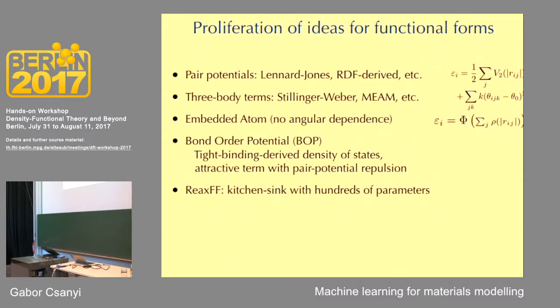It's just a sum of a pair potential V2 with a particular functional form. You can derive a different functional form from the radial distribution function of a liquid. It doesn't work for many covalently-bonded materials like carbon and silicon. So people have invented other things, adding angle terms — for example, a spring constant k and the angle θ_ijk between every triplet of atoms, with θ_0 being the equilibrium angle, say 109 degrees for tetrahedral bonding. You add a penalty for deviations from that. Not a very good approximation.